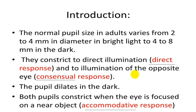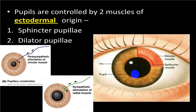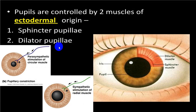When a person looks at a distant object and then tries to look at a near object, both eyeballs converge and the pupil constricts — this is called the accommodative response. There are two types of fiber: sphincter pupillae (circular fibers) decrease the size of the pupil, while dilator pupillae (perpendicular fibers) dilate the pupil and allow more light to fall on the retina, particularly in darkness.